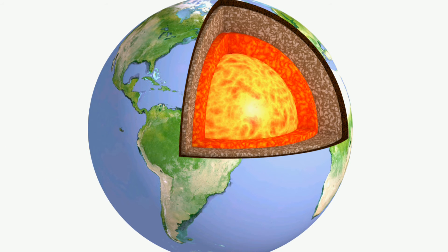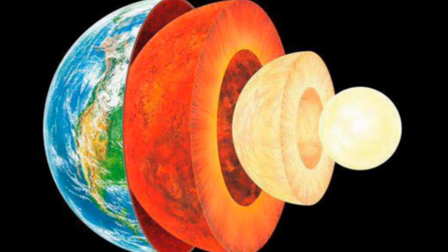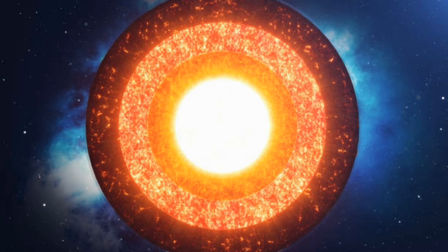Below the mantle, at a depth of about 2,900 km, there is a layer called the core. The Earth's core is in the middle of our planet, composed mainly of metals. Heavy metals are found in the core with the abundance of nickel (Ni) and iron (Fe). It is also known as Nife. Due to heavy external pressure and internal heat, the temperature of this layer is estimated to be 5,000 degrees Celsius. No substance can remain in a solid state at this high temperature.